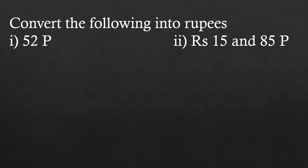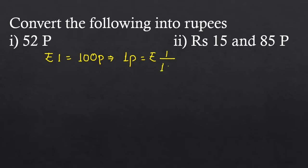The first question is to convert the following into rupees. We know that 1 rupee equals 100 paise, which means 1 paise equals 1 upon 100 rupees. So if 1 paise equals 1 upon 100 rupees, and we are given 52 paise in this question, then 52 paise will be equal to rupees 52 upon 100.